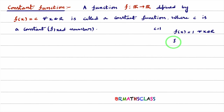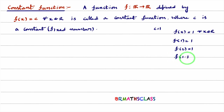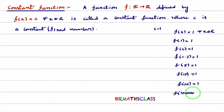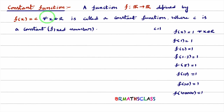It tells us that f(1) = 1, f(2) = 1, f(1.3) = 1, f(5) = 1, f(10) = 1, f(30) = 1, and even f(1 lakh) = 1. What I am trying to say is the function is defined as f(x) equal to some fixed number, where x is any real number.